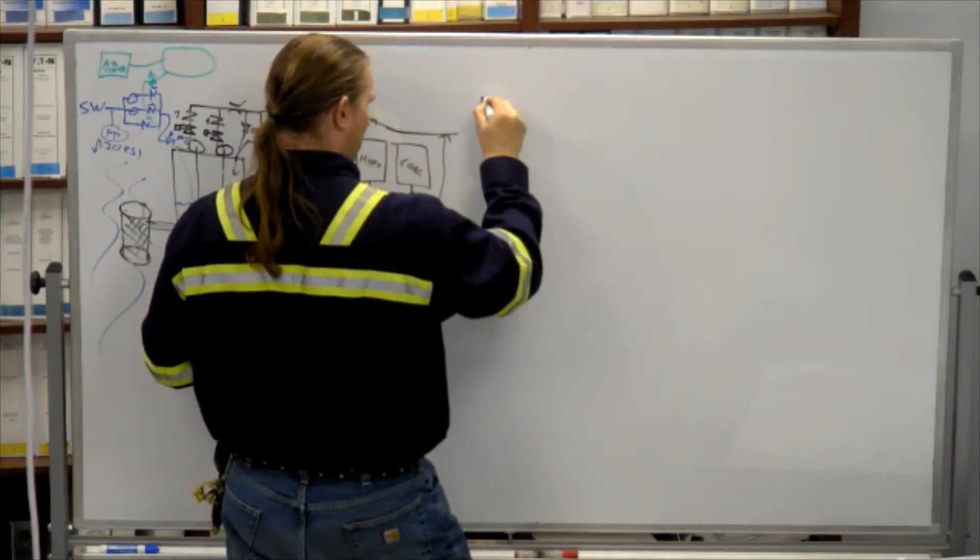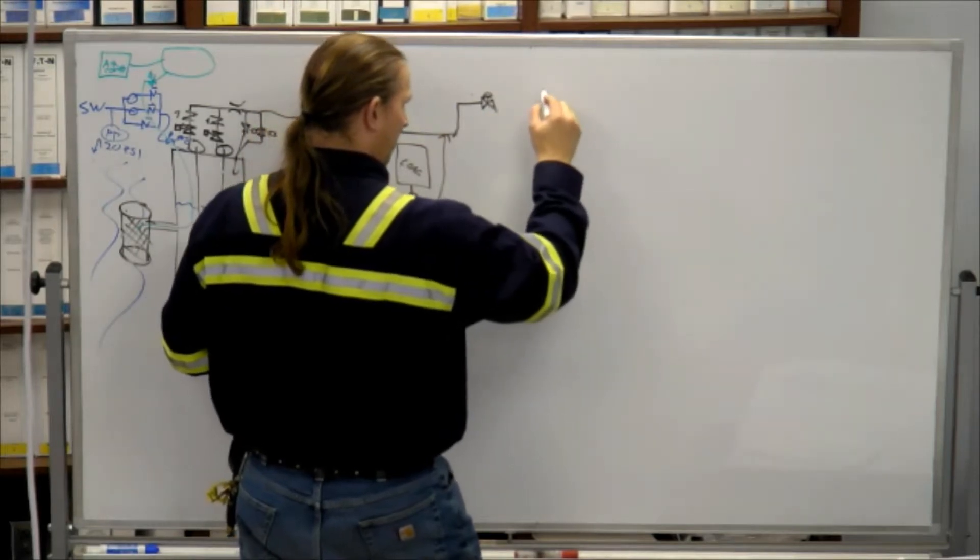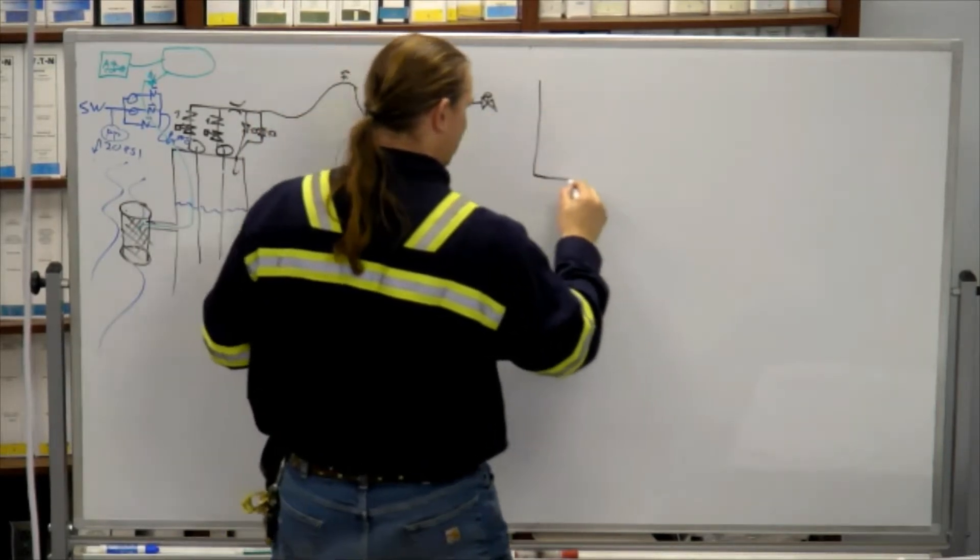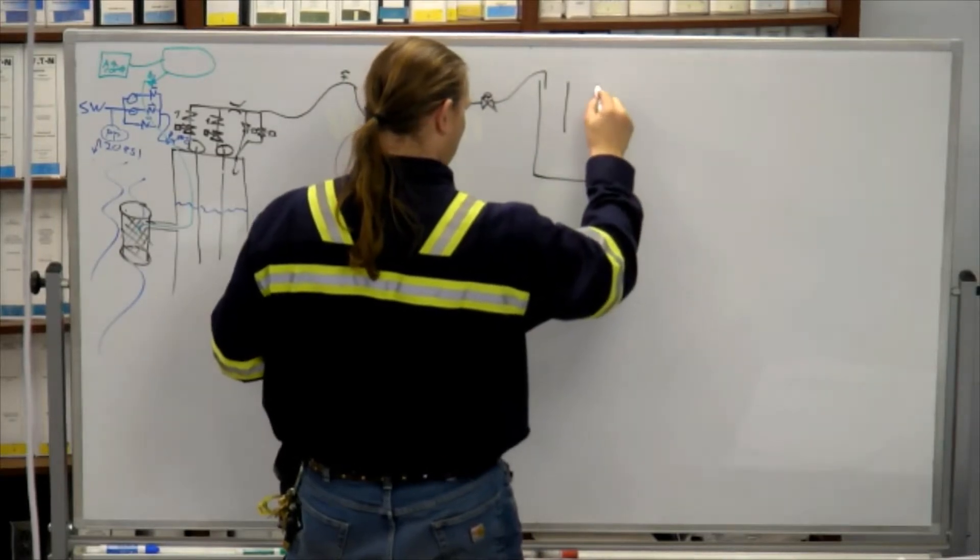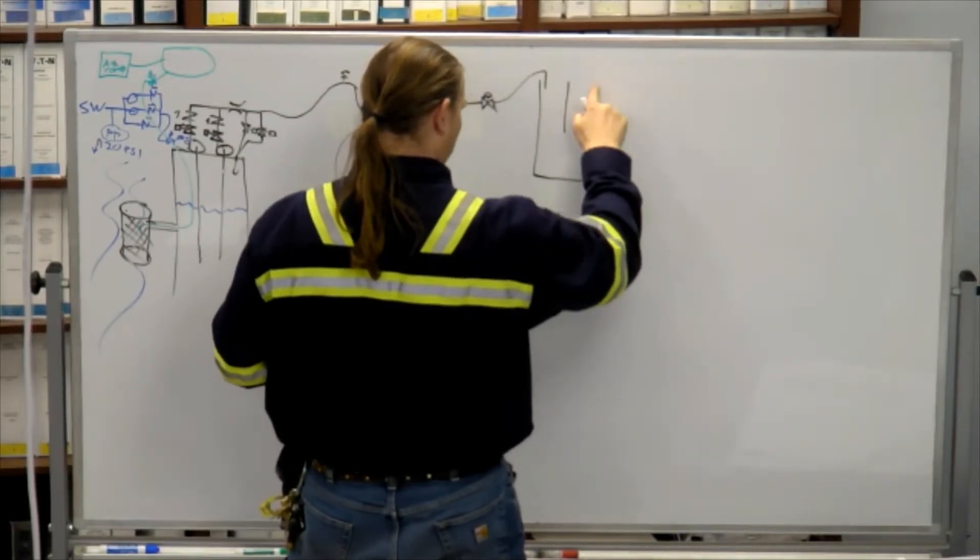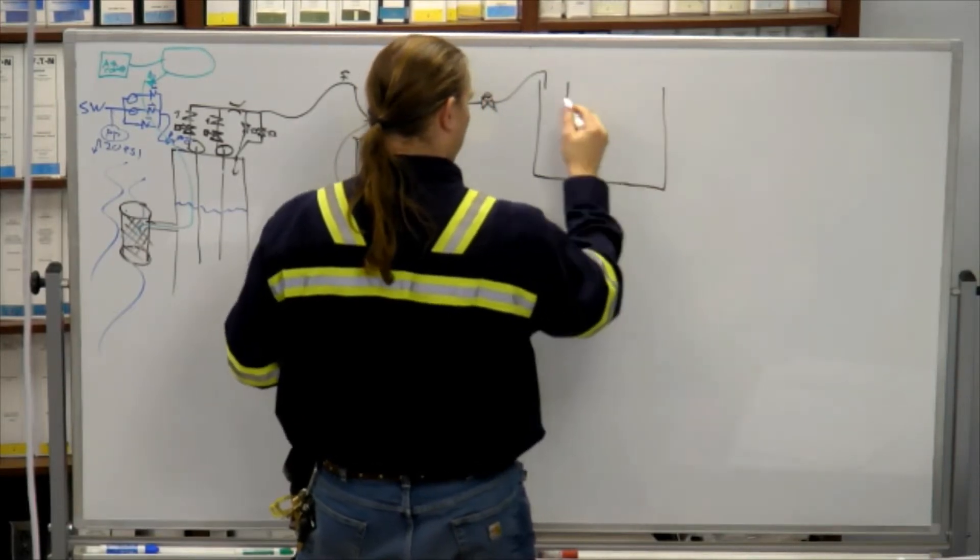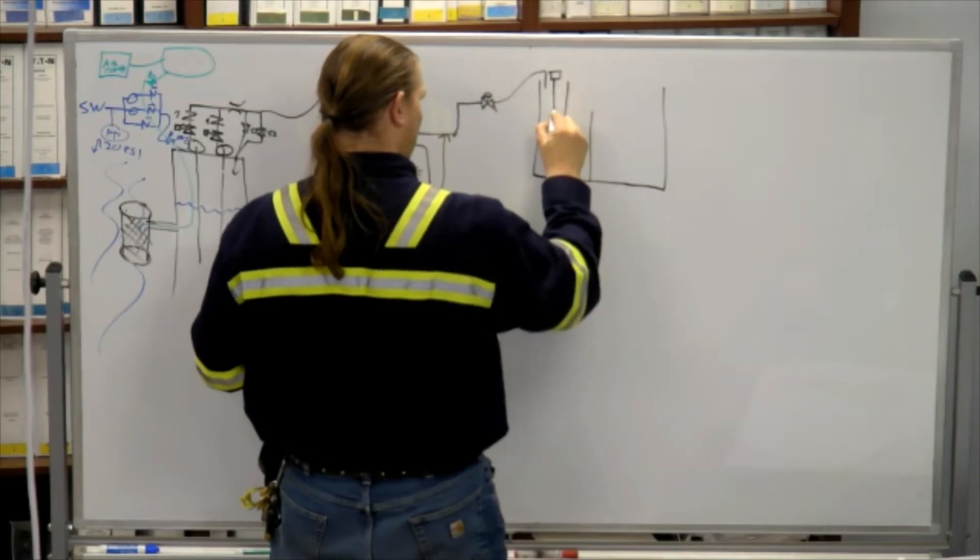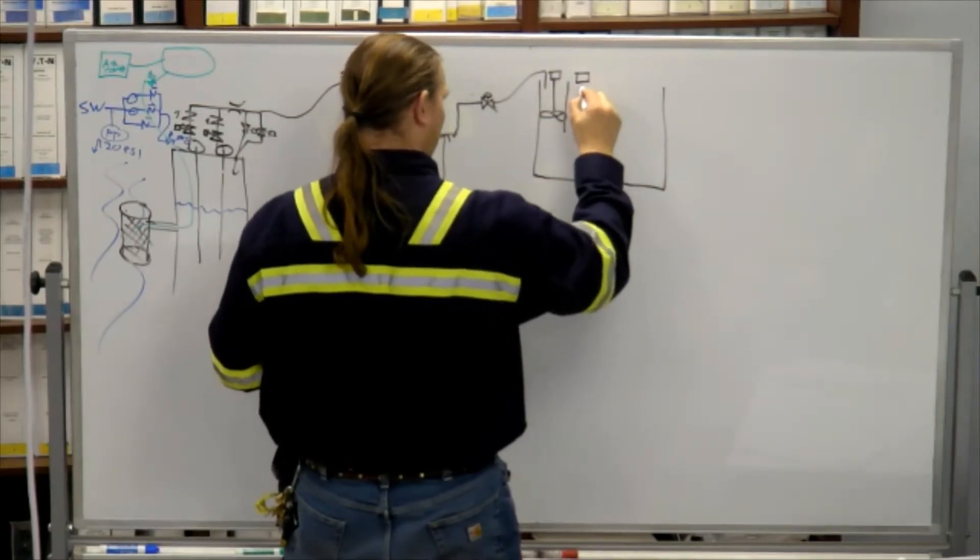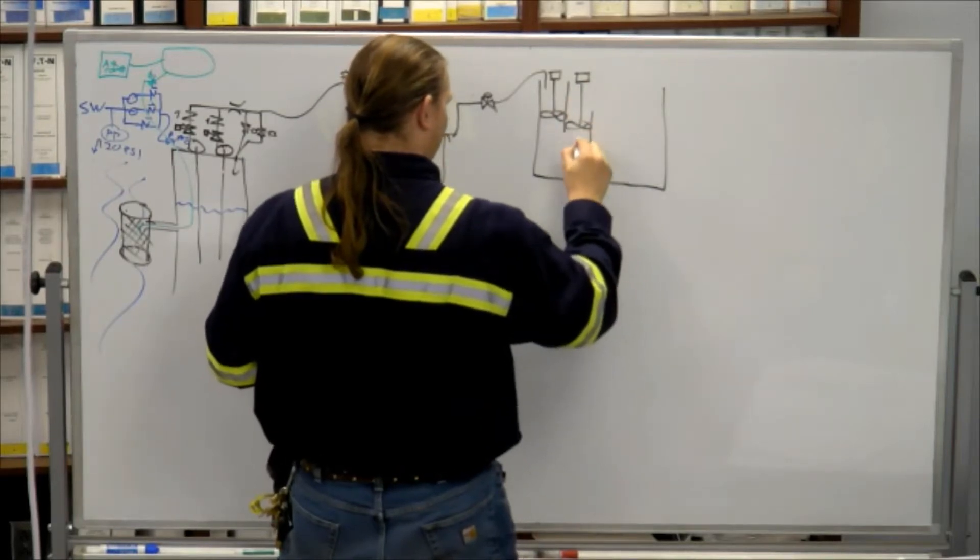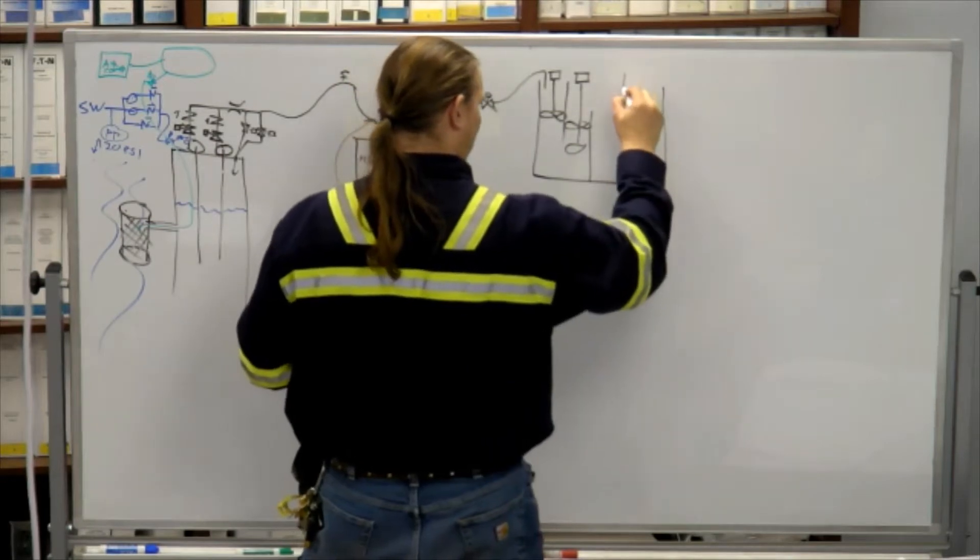We've got a flow control valve. So you've got three chambers, you've got your fast mixer, and then your reaction mixer, and then you've got your rake.